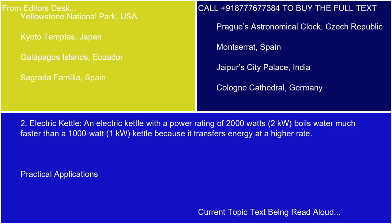Electric kettle: an electric kettle with a power rating of 2,000 watts, 2 kilowatts, boils water much faster than a 1,000-watt, 1-kilowatt kettle because it transfers energy at a higher rate.